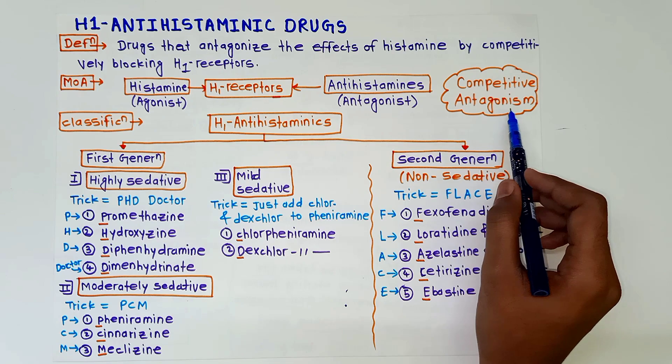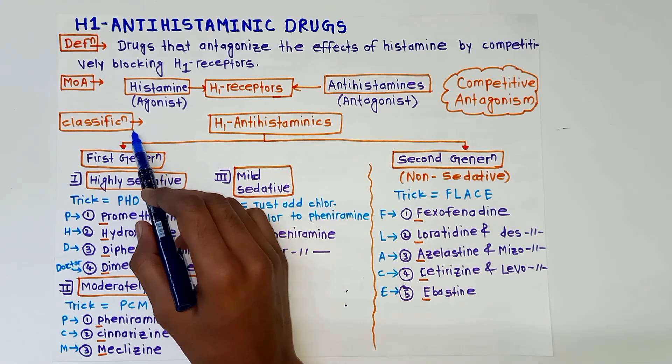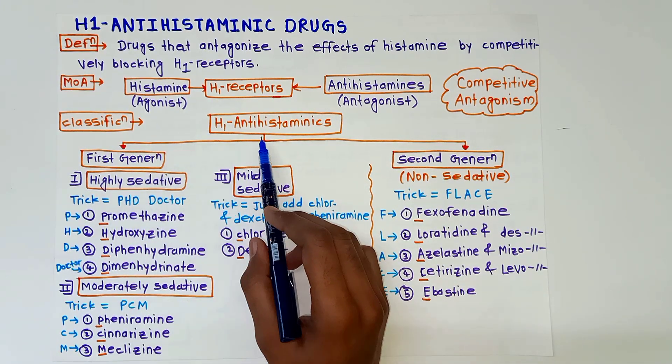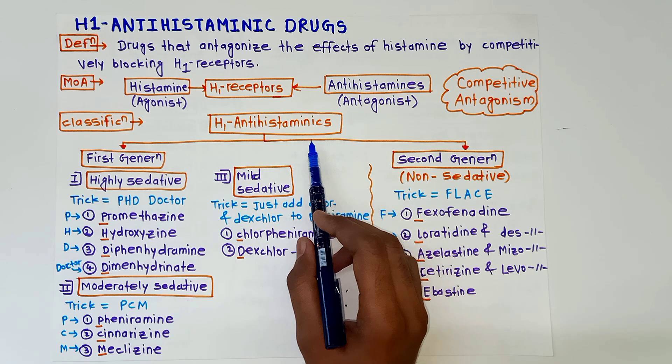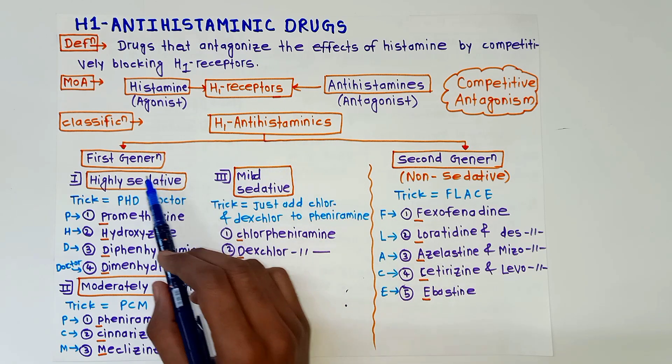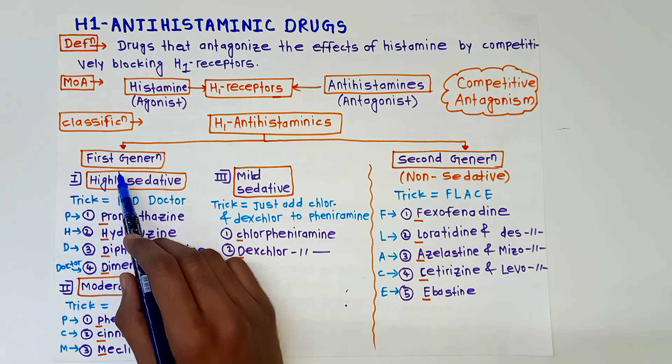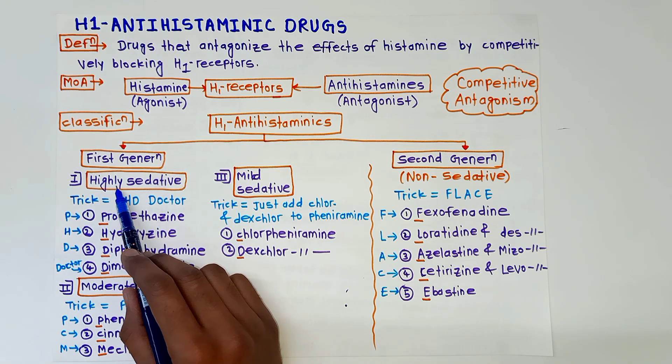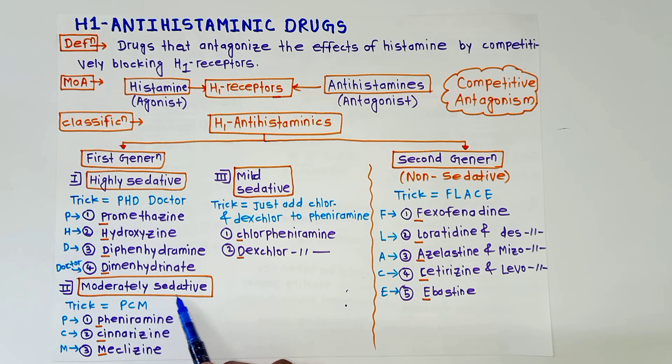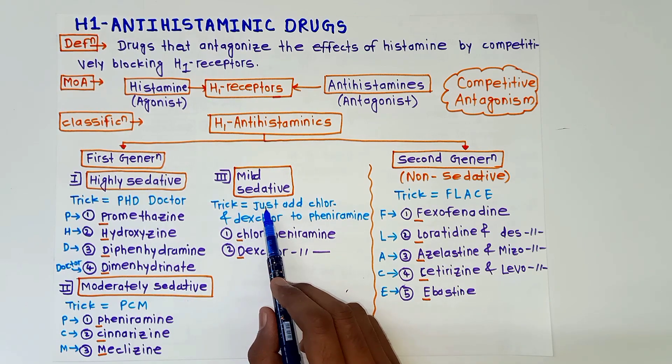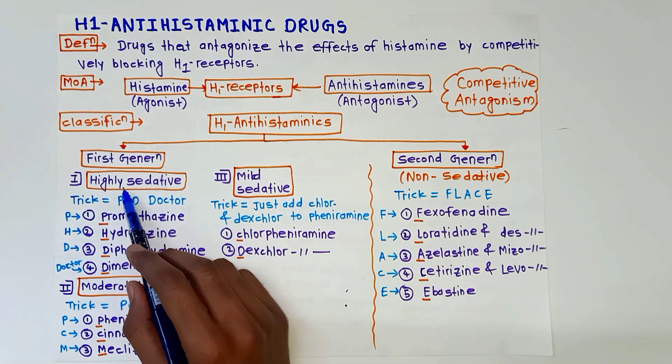Now classification. In classification, H1 antihistaminic drugs are divided into first generation and second generation. So in first generation there are three subtypes: highly sedative, moderately sedative, and mildly sedative drugs.